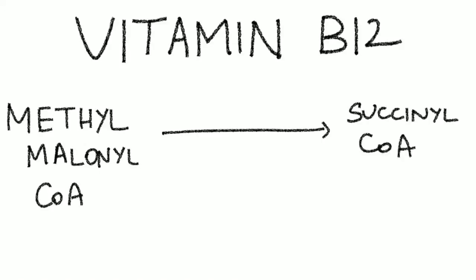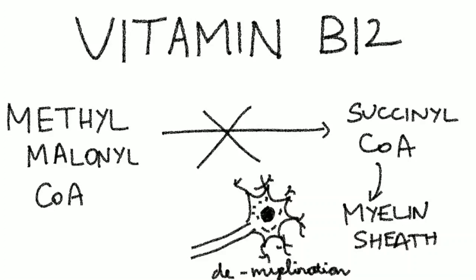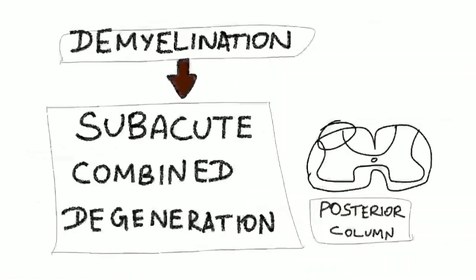Vitamin B12 is also helpful in the conversion of methylmalonyl-CoA to succinyl-CoA. This succinyl-CoA is helpful in formation of myelin sheath around the neurons. So in vitamin B12 deficiency, this is not happening. Methylmalonyl-CoA levels will be elevated and succinyl-CoA will not be formed, so myelination is not happening. This leads to demyelination, and this commonly affects certain tracts in the spinal cord, leading to a condition called subacute combined degeneration. This commonly involves the posterior column and the pyramidal tracts in the spinal cord.